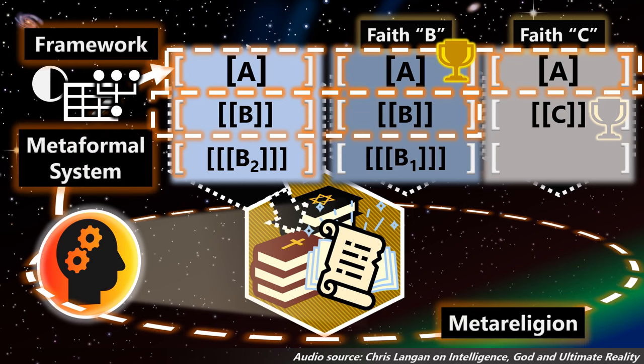This meta-formal system is a framework in which all of these religions, these faiths, can be interpreted logically. And then once you get them in there, then you understand how they really relate to each other. And once you understand how they relate to each other, then you can start working on removing the conflicts between them. There's a lot of misunderstanding there.